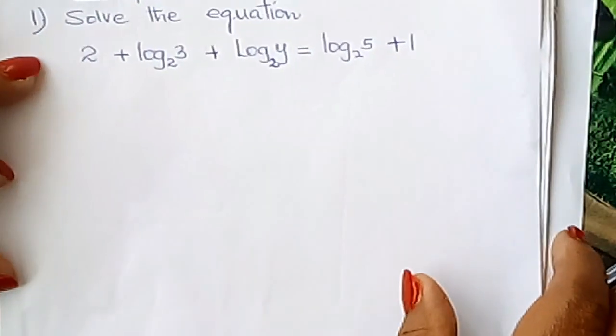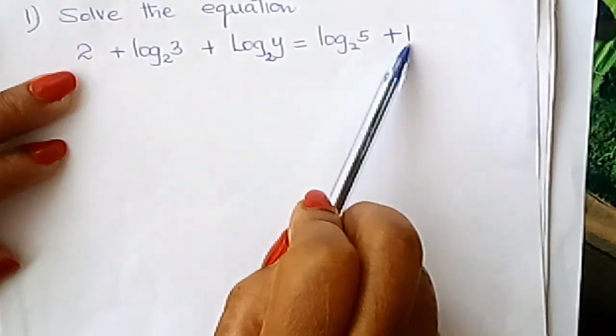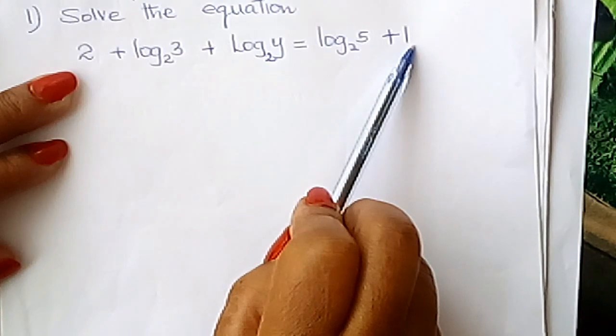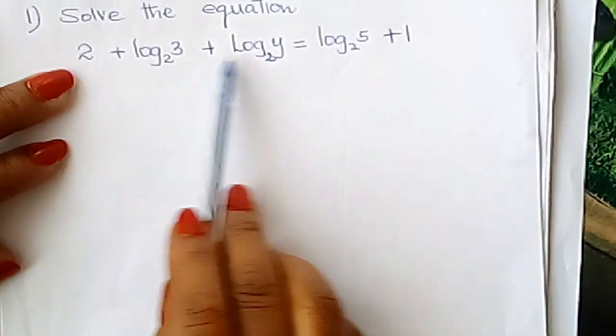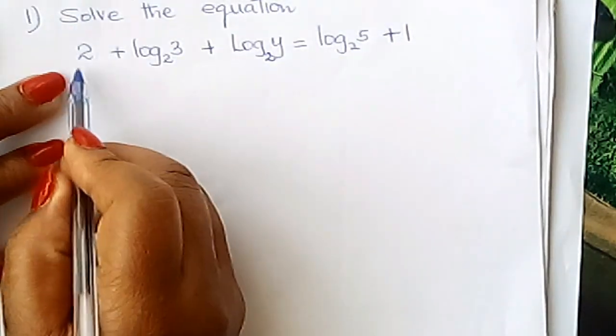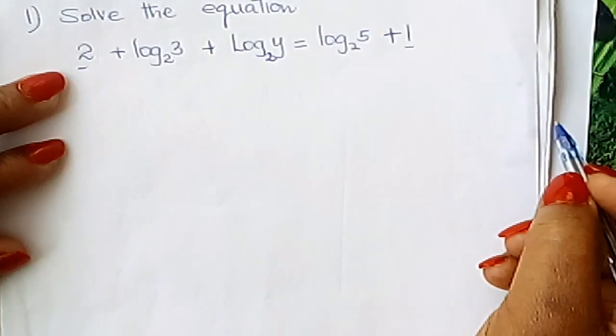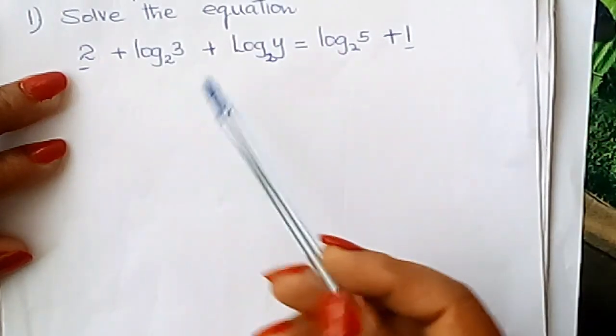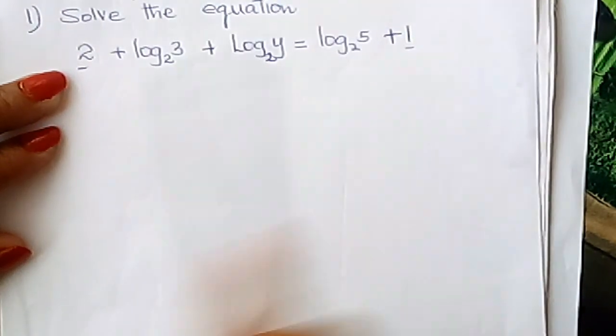If you look at this equation, we have a 2 here and we have a 1 here. Those are not expressed in terms of logs. The others have logs. So we need to express this term and this term in terms of log. How do you go about this? How do you introduce log here and here?